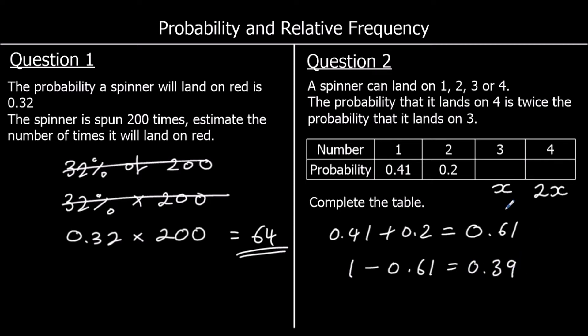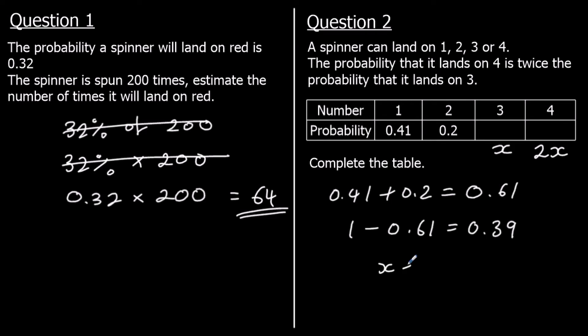So x and 2x must add up to 0.39. x and 2x make 3x. So if we divide by 3, we get x is 0.13. So the probability of a 3 is 0.13. The probability of a 4 is double that, 0.26.